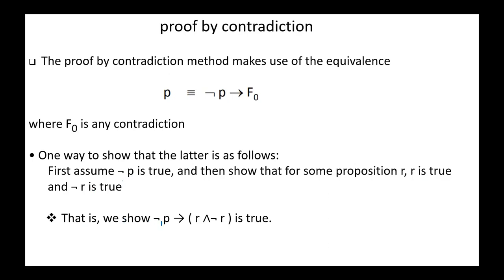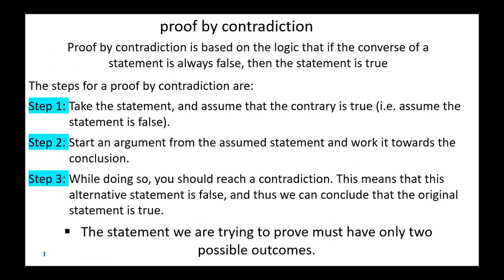Proof by contradiction is based on the logic that if the converse of a statement is always false, then the statement is true. The steps are: Step 1, take the statement and assume that the contrary is true, meaning we assume the original statement is false. Step 2, start an argument from the assumed statement and work towards the conclusion. Step 3, while doing so, you should reach a contradiction. This means the alternative statement is false, and thus we can conclude the original statement is true.